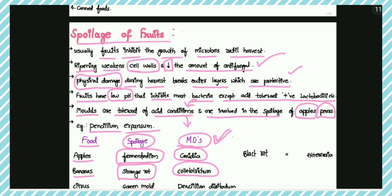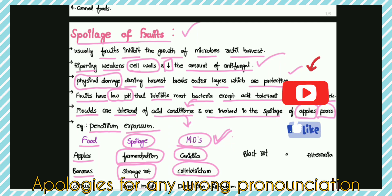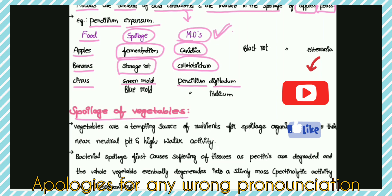In summary, fruits usually stop the growth of microorganisms until harvest. Ripening weakens the cell walls and reduces antifungal properties. Physical damage is also a cause. Fruits have low pH which inhibits most bacteria except acid-tolerant Lactobacilli. Molds are tolerant of acid conditions and are involved in the spoilage of apples and pears.